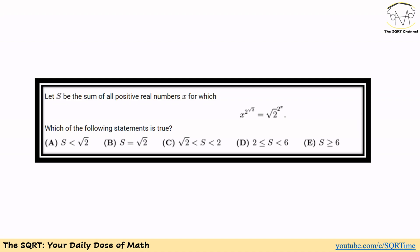There are five answer cases to verify. Case A: the sum is less than square root of 2. Case B: it equals square root of 2. Case C: it is greater than square root of 2 but less than 2. Case D: it is greater than or equal to 2 but less than 6. Case E: it is greater than or equal to 6. We are going to find which case applies.